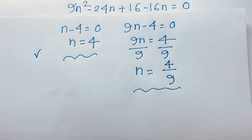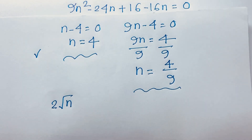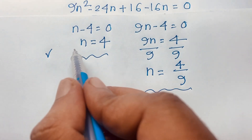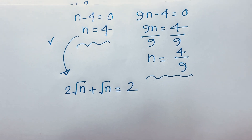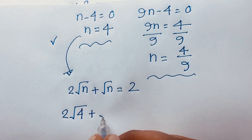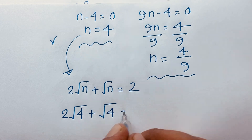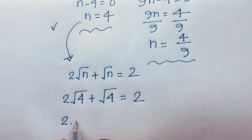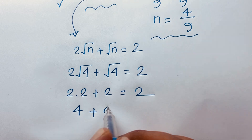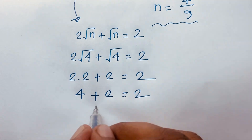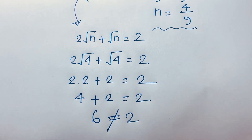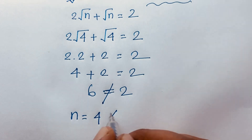Our original question is 2√n + √n = 2. Testing n = 4: 2√4 + √4 = 2·2 + 2 = 4 + 2 = 6. But 6 ≠ 2, so n = 4 is not valid — it is rejected.